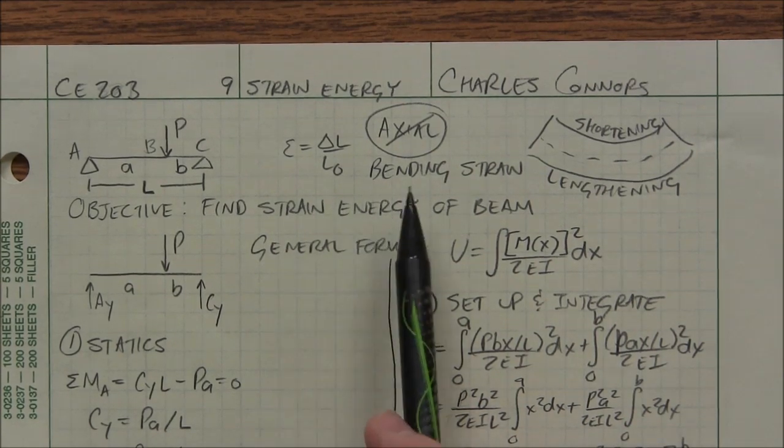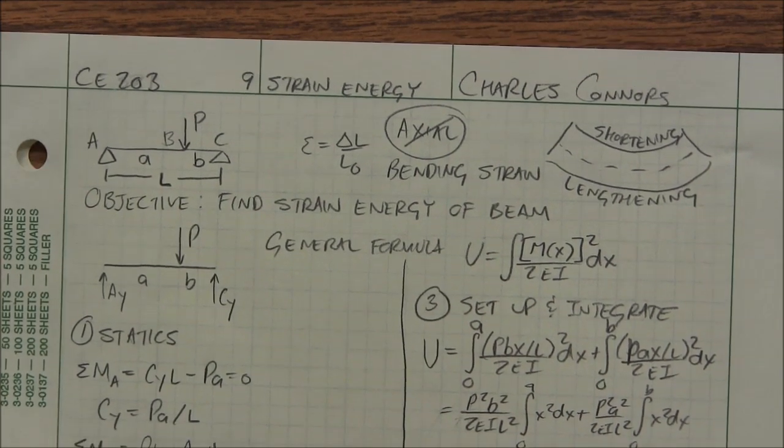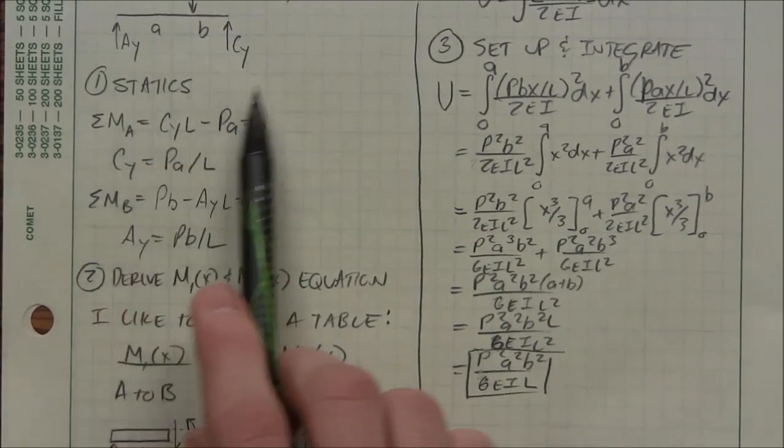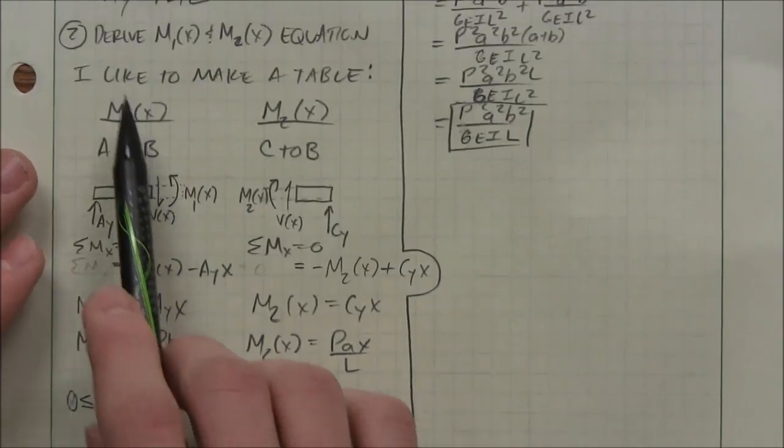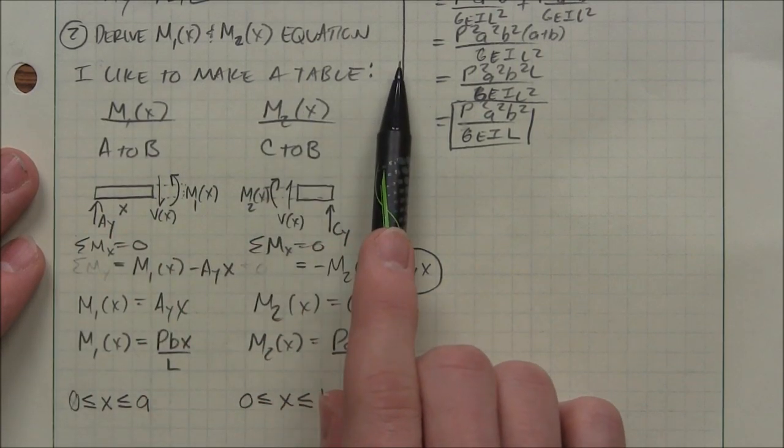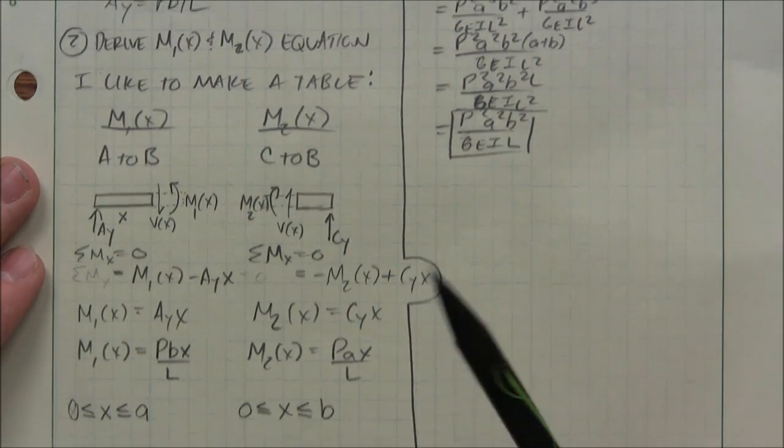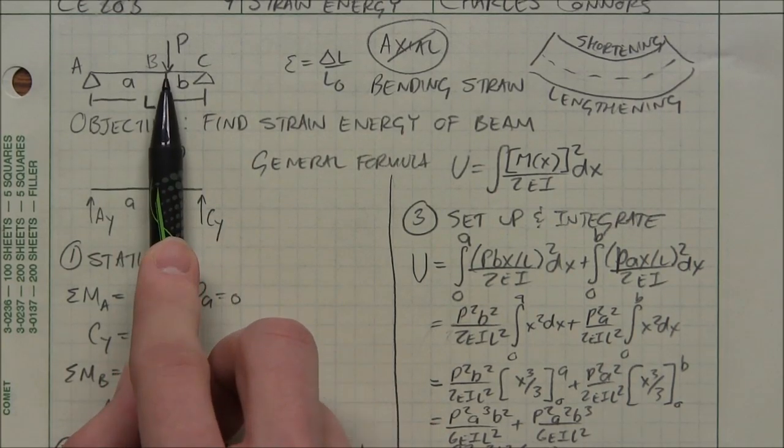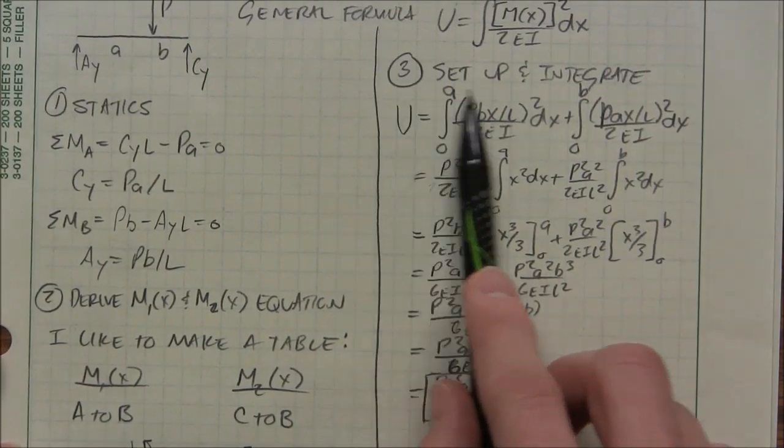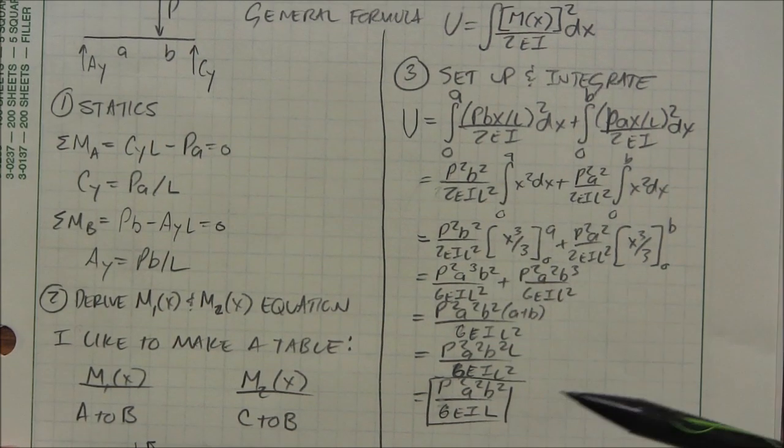So this is an axial strain. All right, so the basic process of what we go through, we're going to look at the statics of our beam. We derive equations for the internal momentum for every component. Really that means on either side of concentrated loads. And then we set up our integral and integrate. It's that simple.